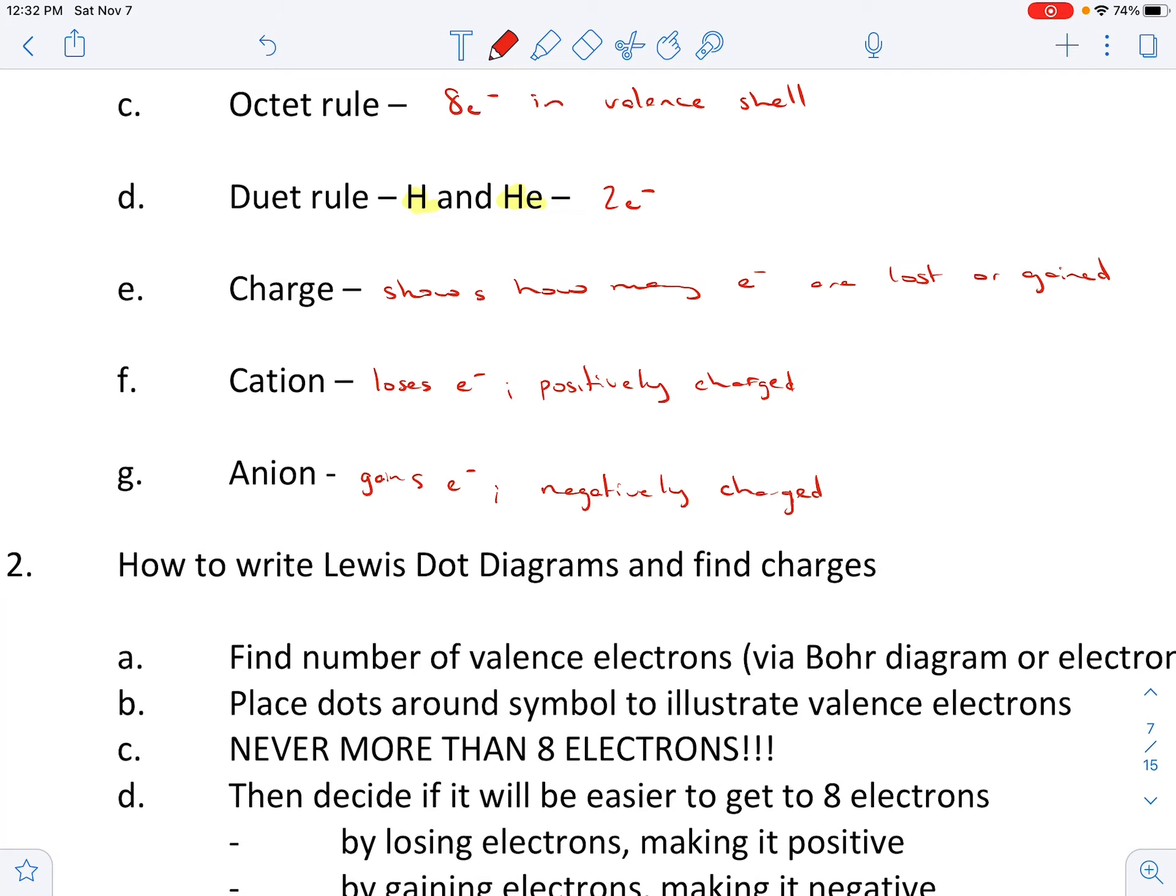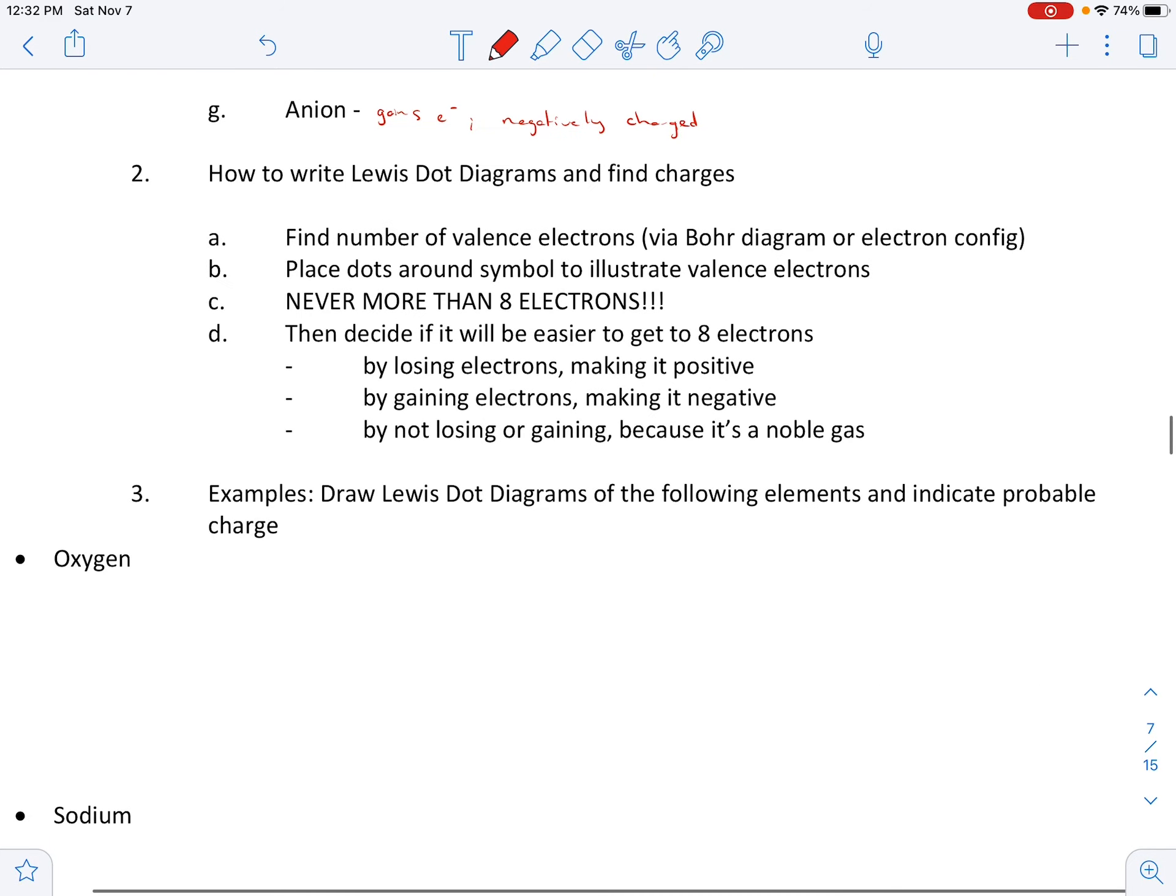So very simply, here we go. How to write Lewis dot diagrams and find charges. The first thing that we're going to do is we find our number of valence electrons. We can either do that by the Bohr diagram or electron config. I'll kind of do both to show you what that would look like. And then we're going to place dots around the symbol to illustrate the valence electrons. There is never going to be more than eight. If you get more than eight, you've done it wrong.